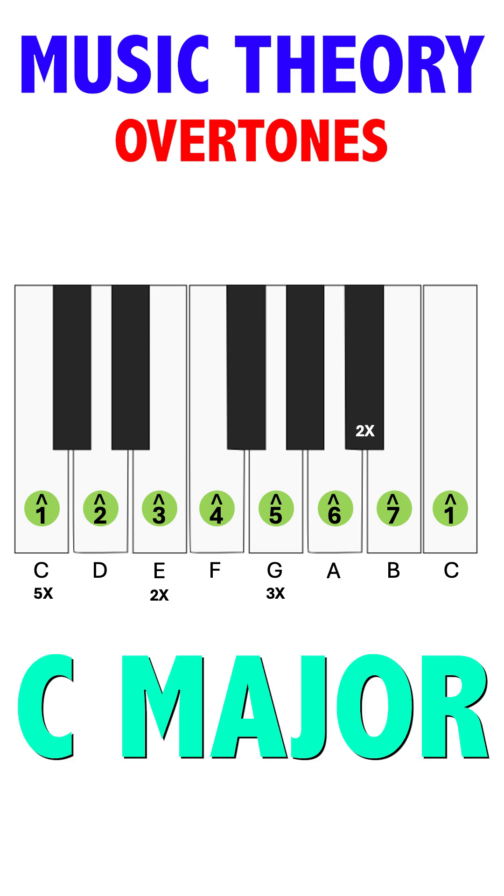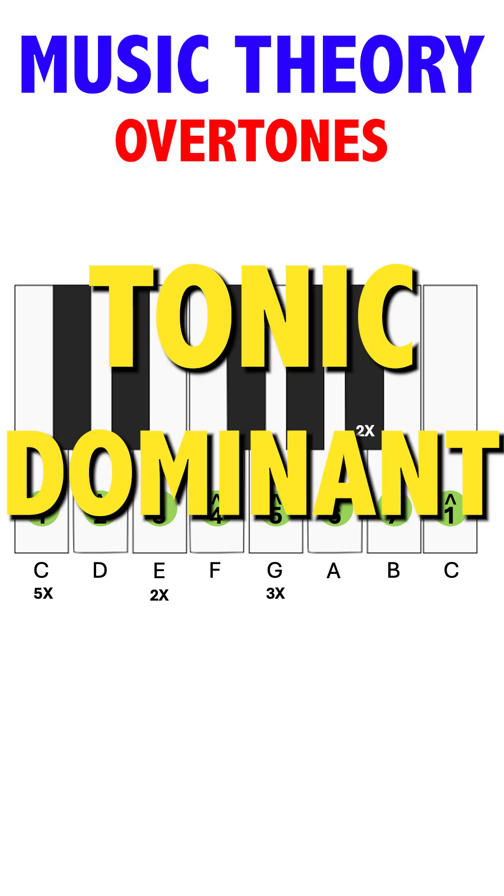C, G, and E are part of the C major scale and are the most stable notes in that scale, in that order. They are called the tonic, the dominant, and the median.